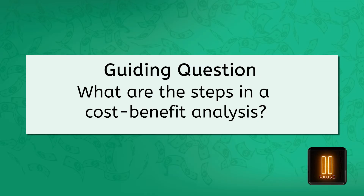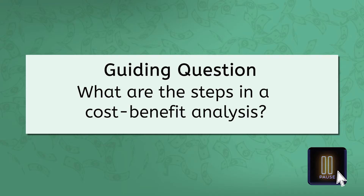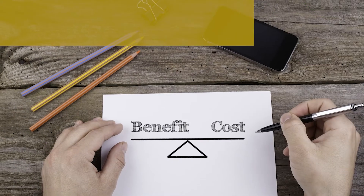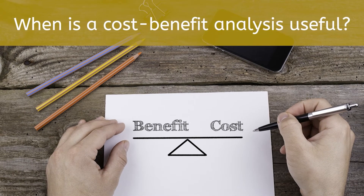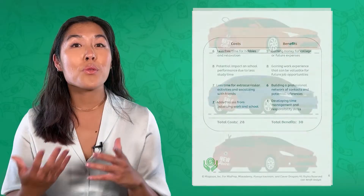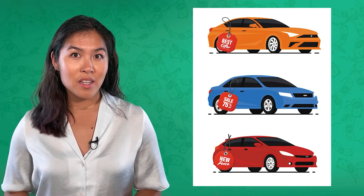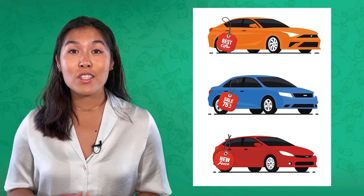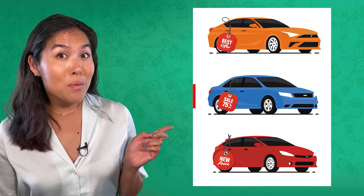Believe it or not, you probably already do something like this, even if you didn't know what it was called. A cost-benefit analysis is super useful when you're trying to figure out if you should go for a single option, like our part-time job example. But it's also great for comparing multiple choices — just go through the process for each and then check out the overall totals. Which one has the best benefits-to-cost ratio? That's probably the one you want to pick.